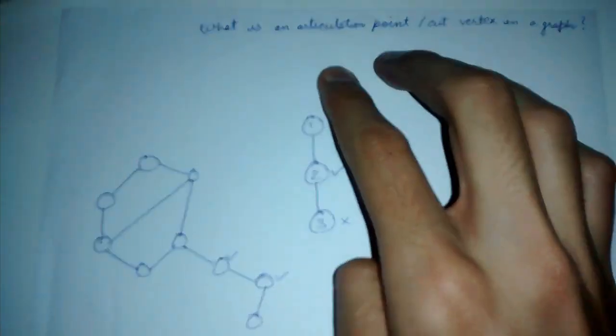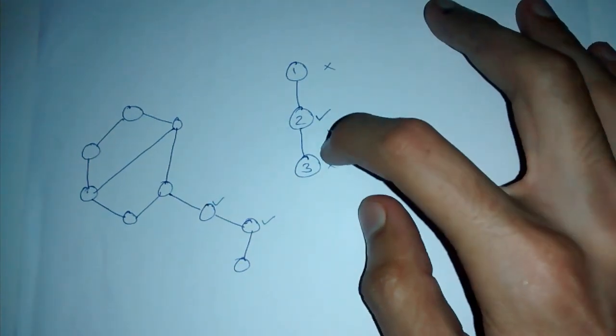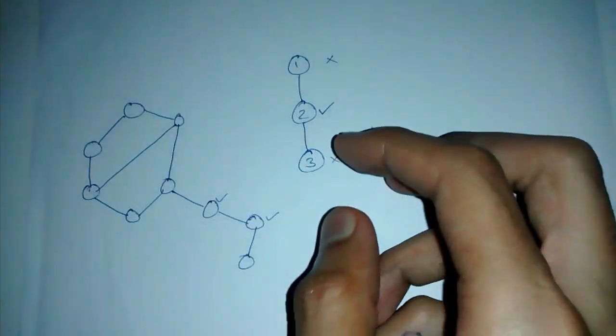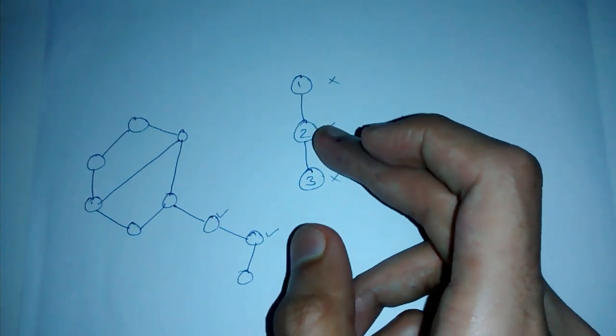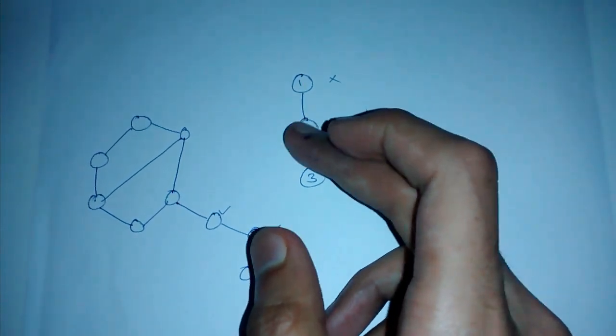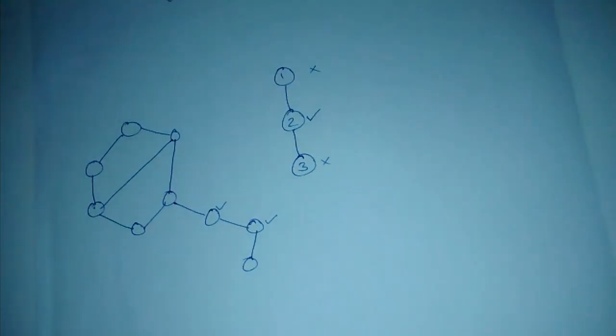Today we'll be quickly seeing what is an articulation point or a cut vertex in a graph. So let's say we are given a graph, then an articulation point or cut vertex is a vertex removing which will disconnect the graph.